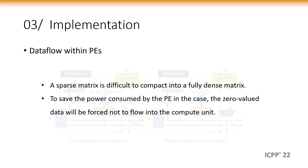Actually, a sparse matrix is difficult to compact into a fully dense matrix. Therefore, the compressed matrix still has zero-valid data. To save the power consumed by the PE in this case, the zero-valid data will be forced not to flow into the compute unit. At this point, the PE skips the calculation and just passes the data to the next adjacent PE.